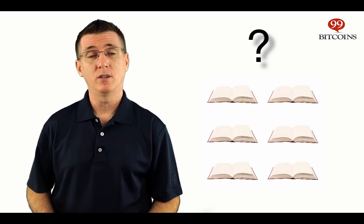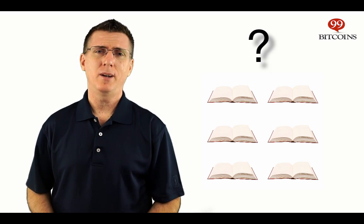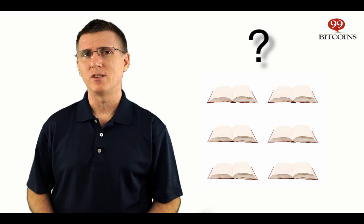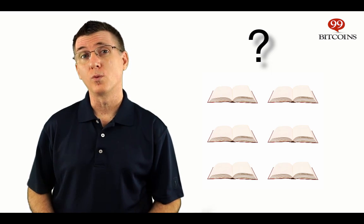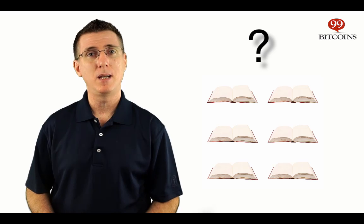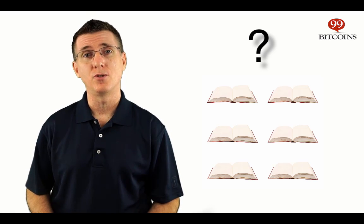Now, remember, Bitcoin doesn't have a central authority that can approve of this history book, which means that anyone can write it. So how can you have a reliable history book that anyone can write and nobody approves? Well, this could lead to many different versions of this book and we couldn't know which is correct. Perhaps we need some kind of voting system to make sure we can all agree on the right version of the history book and make sure that bad people can't profit by causing confusion.